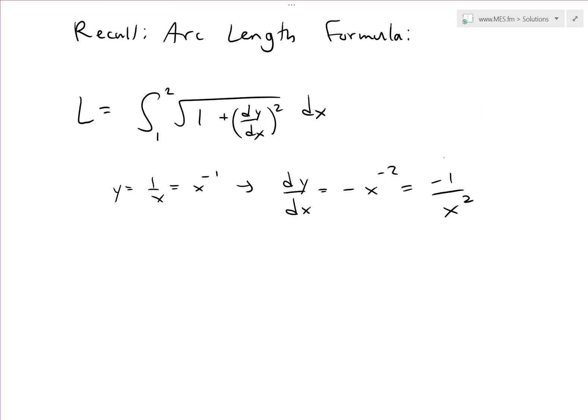And now when we will throw this inside, we get L is equal to integral from 1 to 2 of square root 1 plus, put this in here, the negatives - when you square a negative, it just becomes positive anyway. So 1 over x to the power 4. So that's how that looks like, dx.